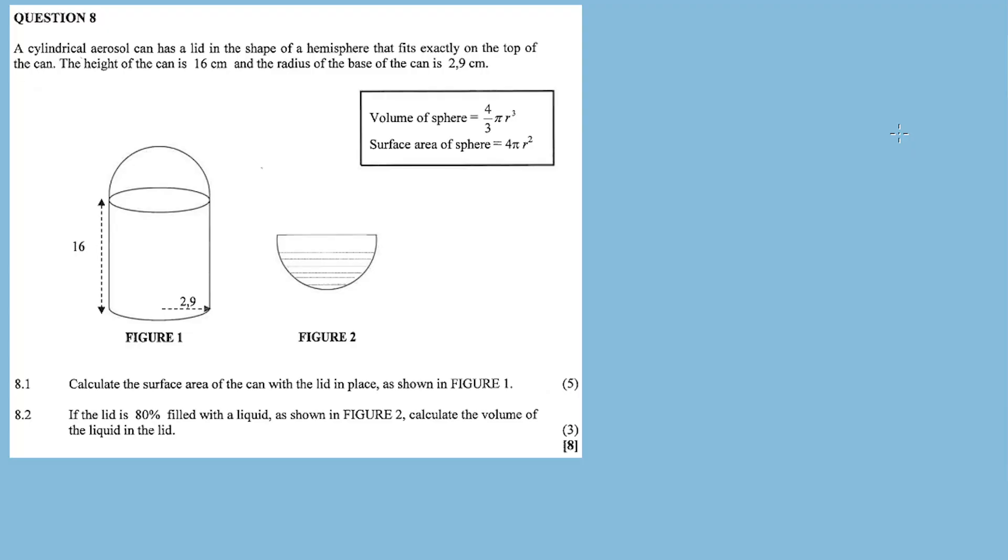Question 8: A cylindrical aerosol can, a body spray, has a lid in the shape of a hemisphere that fits exactly on the top of the can.